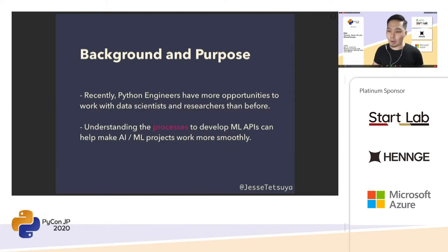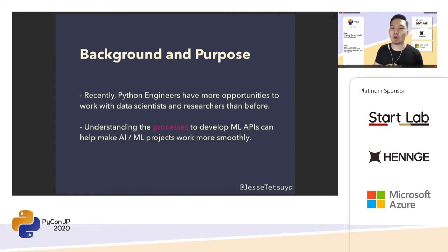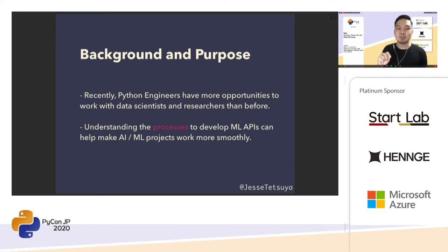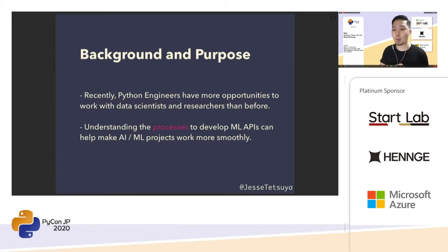The reason I'm going to talk about these topics is because recently Python engineers have more and more opportunities to work with data scientists or researchers than before. Understanding the processes to develop ML APIs can help make AI/ML projects work more smoothly. The target audience might be engineers who are working with data scientists or researchers, or engineers who are involved with AI/ML projects. But this topic seems to be very broad, so the development process can be different depending on the situation of your working place.